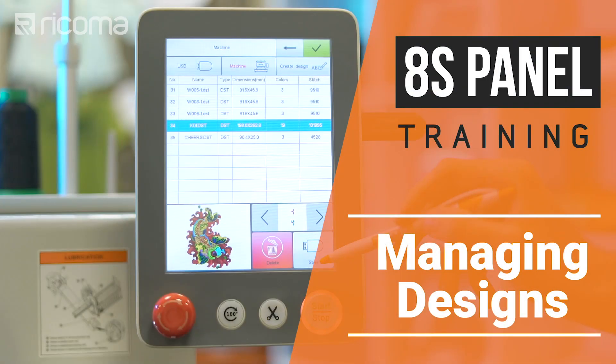Your embroidery machine's memory holds 20 million stitches. To clear space, delete the designs you'll no longer need. Follow these quick steps to delete a design from your machine's memory.